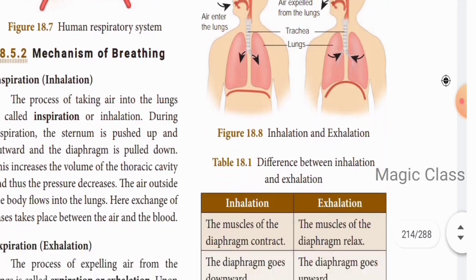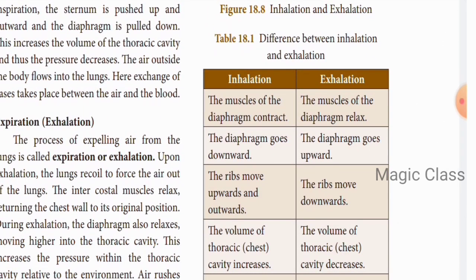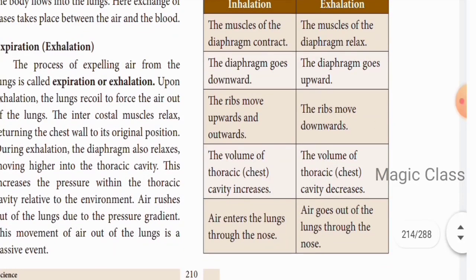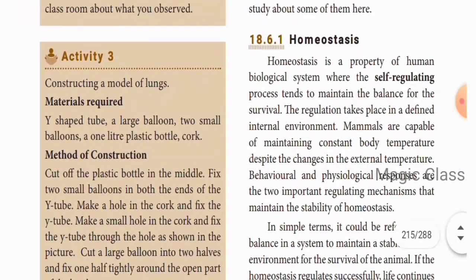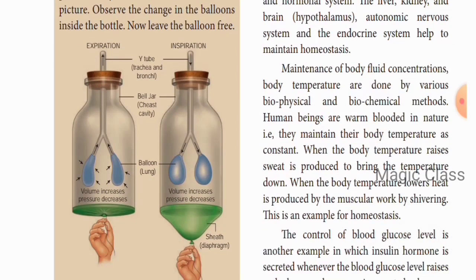To summarize the differentiation: during inhalation, the diaphragm contracts and moves downward, ribs move upward and outward, volume of thoracic cavity increases, pressure decreases, and air enters the lungs. During expiration, the opposite occurs — ribs move downward, volume decreases, and air goes out. There is also a practical activity using a bottle and a red balloon to demonstrate how the diaphragm works to inhale and exhale. With this, the video is complete — the final video will cover the remaining topics. Thank you, students.